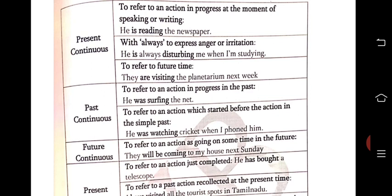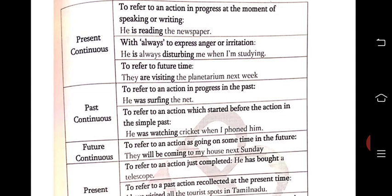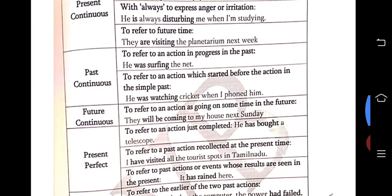You might ask: when 'when' and 'while' appear, do we always use past continuous? Yes, you are absolutely correct. But if the question has 'always', you have to use present continuous tense. If the question does not have 'always' and has the keyword 'when', then you can use past continuous.